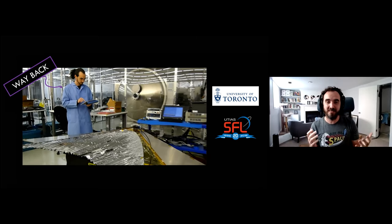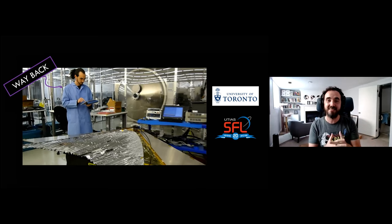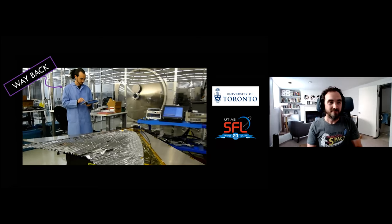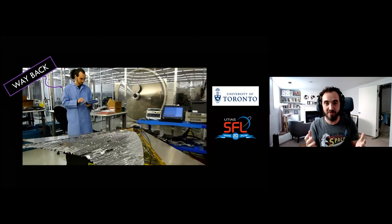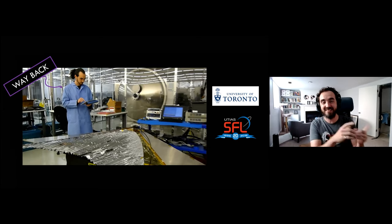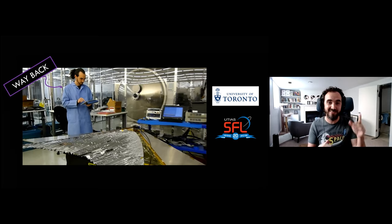Going even further back — so far back I had a ponytail — I was a graduate student at the University of Toronto working on a space debris mitigation mission. That means I was building a satellite designed to reduce space debris. It was such a cool project. As a graduate student, you can actually go and build satellites at that facility in Toronto.